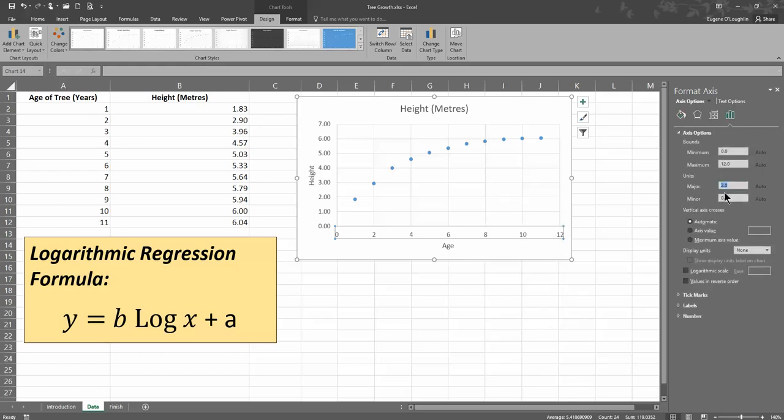Our major units, in the format axis option in the centre here on the right-hand side, you can see that it's 2. I've highlighted it just now. And I want to change this to 1 just so that I can see each of the years on my chart.